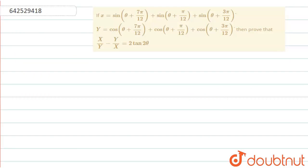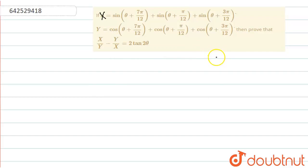Hello students, the question given here is: if X is equal to sin(θ + 7π/12) plus sin(θ + 5π/12) plus sin(θ + 3π/12), and Y is equal to cos(θ + 7π/12) plus cos(θ + 5π/12) plus cos(θ + 3π/12), then prove that x/y minus y/x is equal to 2tan2θ.